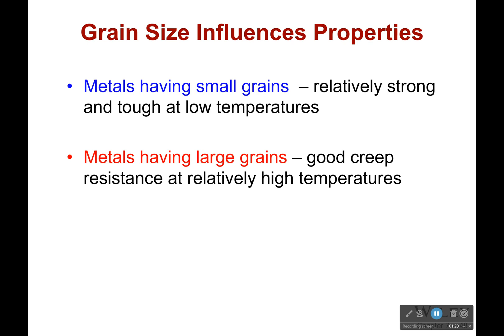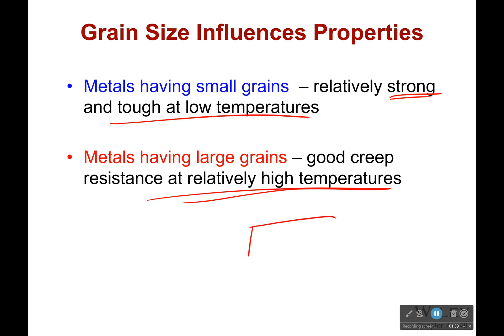Now just like everything else has influenced properties, grain size also influences properties. Metals having small grains are usually strong and tough at low temperatures. Metals having large grains have good creep resistance at relatively high temperatures. Creep is when something is going to start deforming even if we haven't increased the stress. So if we go to high temperature, even if a force normally wouldn't cause any strain, at higher temperatures this force will begin to cause strain — it'll just begin to stretch, and that's called creep.